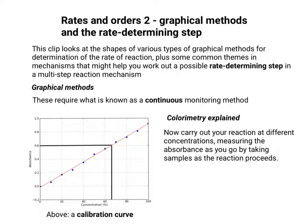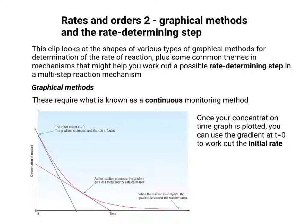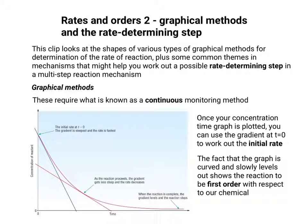If you carry out your reaction and take samples of your colored chemical as the reaction proceeds, you can then plot a concentration-time graph to determine the order of reaction with respect to the colored chemical. Once your concentration-time graph is plotted, you can use the gradient at t equals 0 to work out the initial rate. You could repeat this process at different concentrations and use the initial rates method, or you could look at the shape of the curve — the fact that the graph is curved and slowly levels out indicates the reaction is first order.